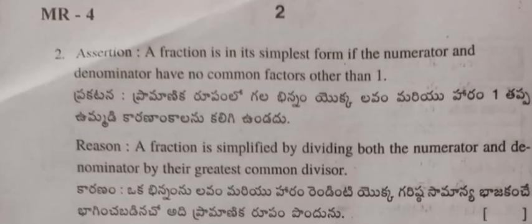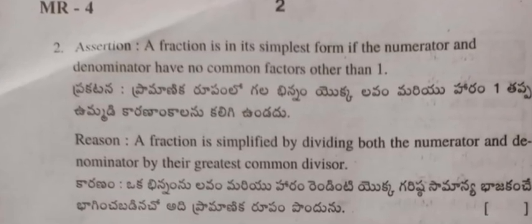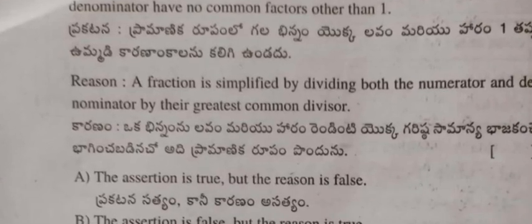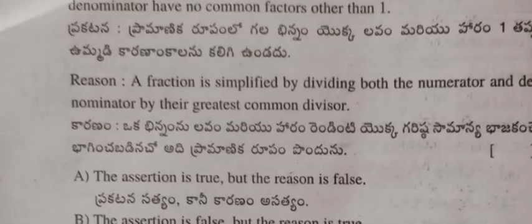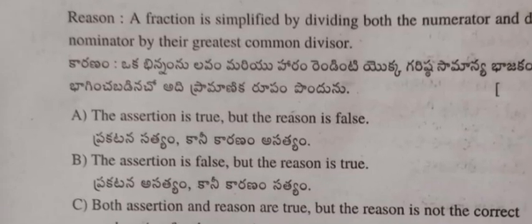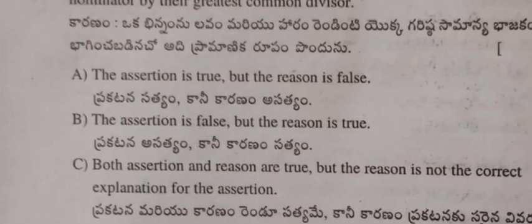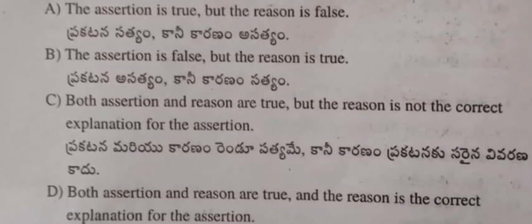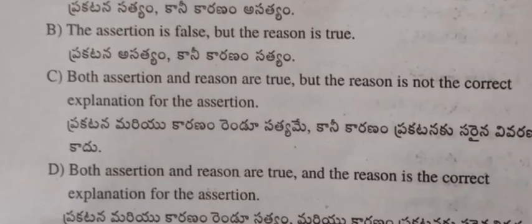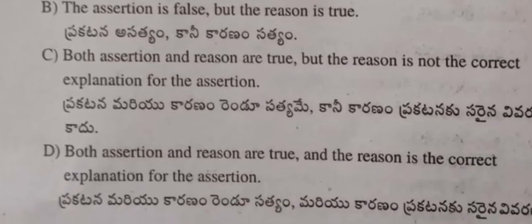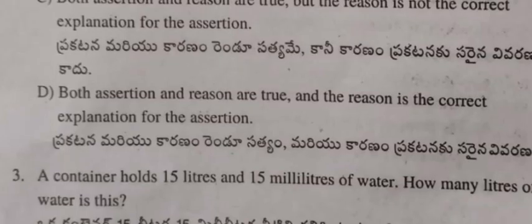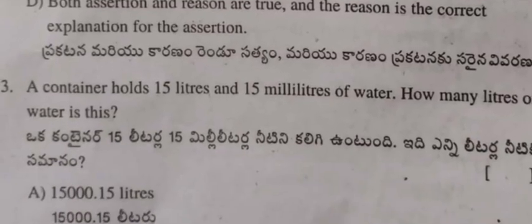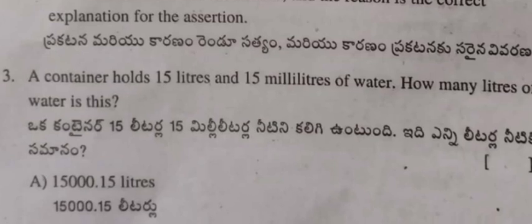Question 2: Assertion — A fraction is in its simplest form if the numerator and denominator have no common factors other than 1. Reason — A fraction is simplified by dividing both the numerator and denominator by their greatest common divisor. (A) Assertion is true but reason is false. (B) Assertion is false but reason is true. (C) Both are true but reason is not the correct explanation. (D) Both are true and reason is the correct explanation.